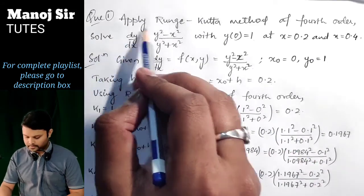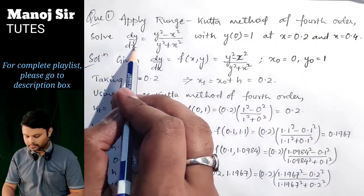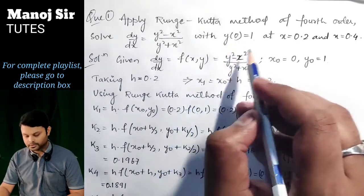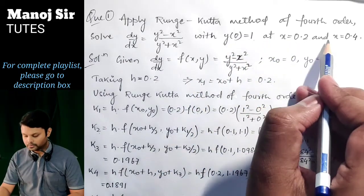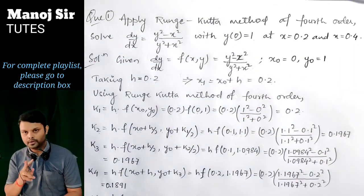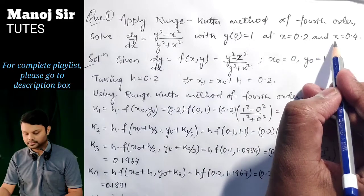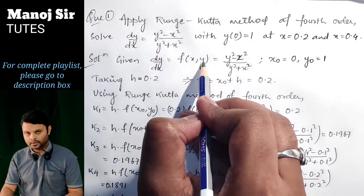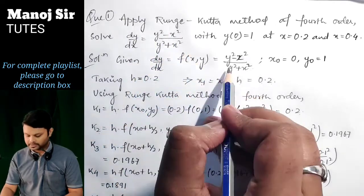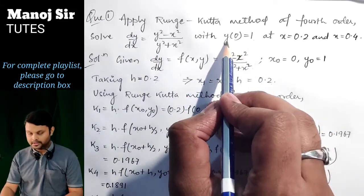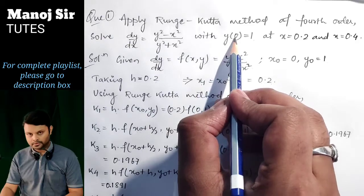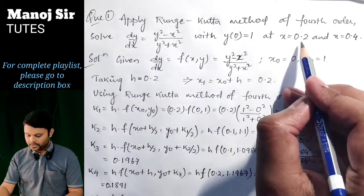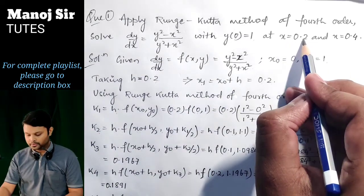Now coming to the question: apply the Runge-Kutta method of fourth order to solve dy/dx = (y² - x²)/(y² + x²) with y = 1 when x = 0, at x = 0.2 and x = 0.4. We need to find two values of y: first when x = 0.2 and second when x = 0.4. The function f(x, y) = (y² - x²)/(y² + x²), and the initial condition is x₀ = 0, y₀ = 1.